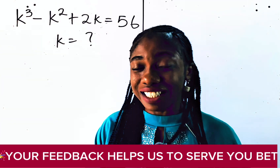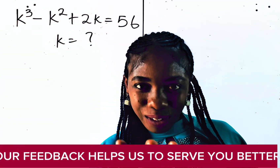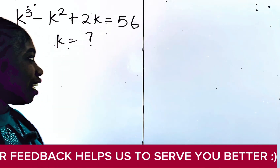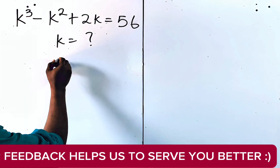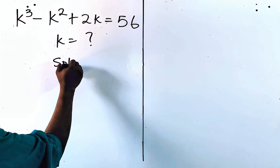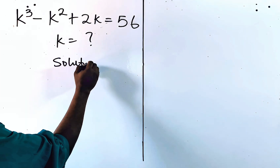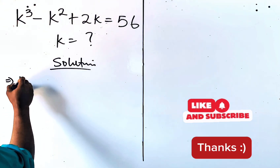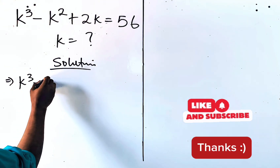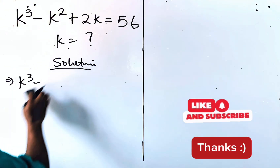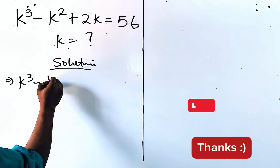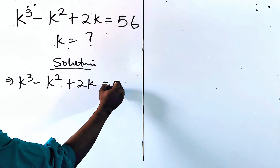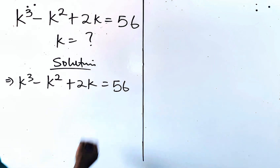What it means is that we are expected to have 3 solutions for k. So you begin with your solution. This is what we have: k cubed minus k squared plus 2k is equal to 56.